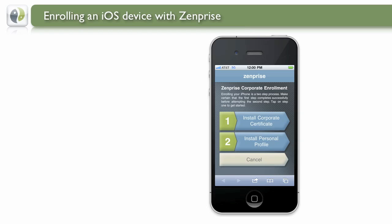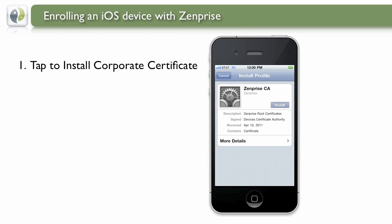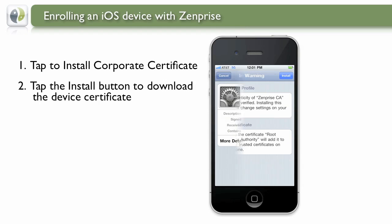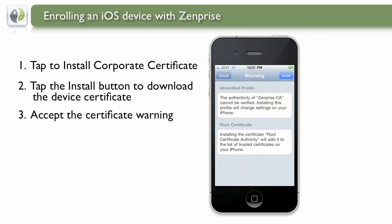The next step is to get your phone securely enrolled with the Device Manager server. This is accomplished by installing a corporate certificate. Tap the Install Corporate Certificate button. You'll be presented with a new certificate that needs to be installed and validated. Go ahead and tap the Install button to download the new certificate. The Device Certificate is unfamiliar to the device since it is new. We'll want to approve the certificate since we do trust the Device Manager server we're enrolling with. Accept the certificate warning by tapping the Install button.